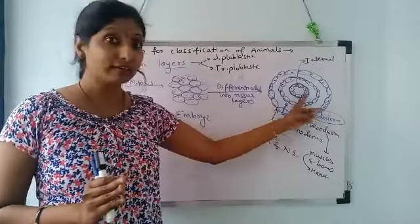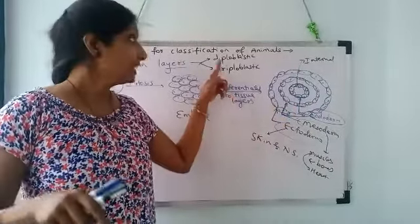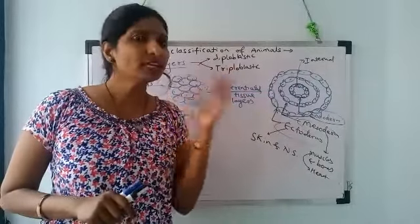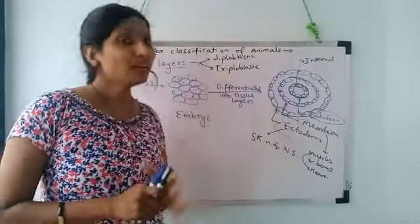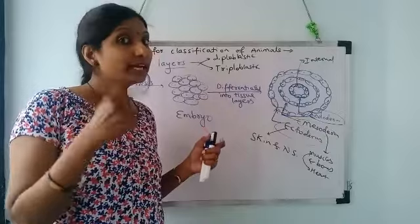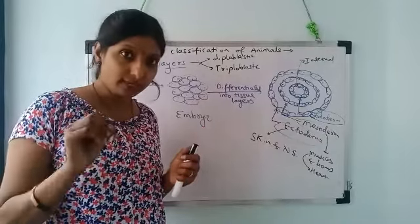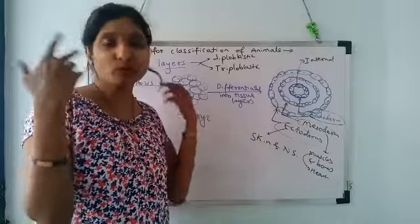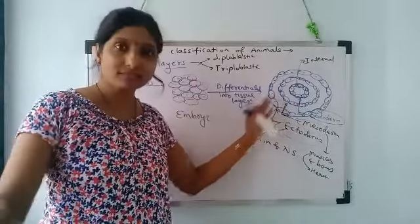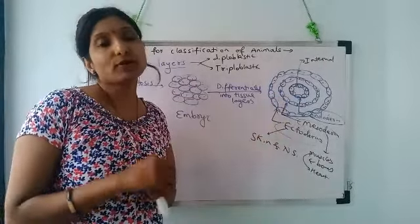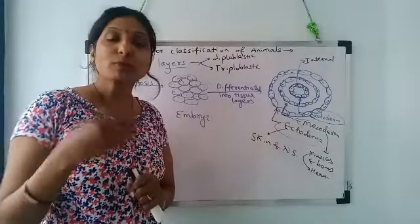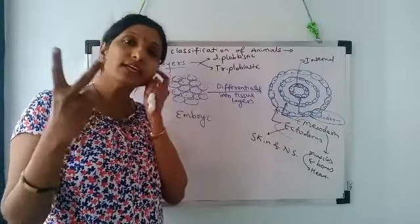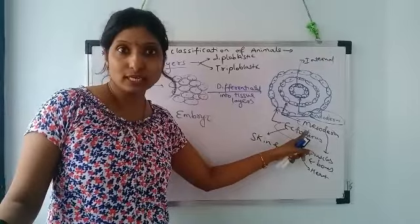So the animals who have three germ layers are called triploblastic and the animals who have only two germ layers are diploblastic. The diploblastic animals have only two layers, ectoderm and endoderm. Are you getting that? For example, sponges don't have tissues at all, so there's no question of germ layers. If I talk about the roundworm Ascaris, it doesn't have muscles because it has only two layers, it's diploblastic. Without mesoderm, there are no muscles and bones.